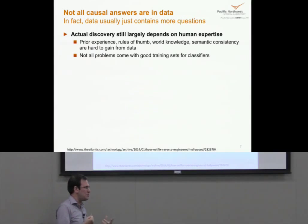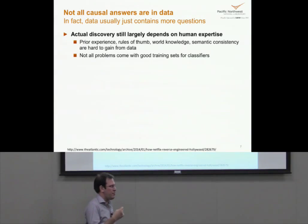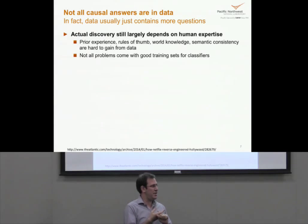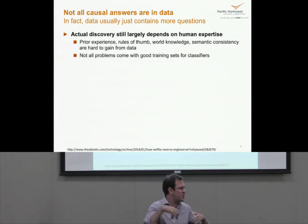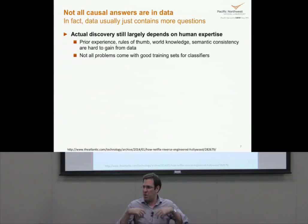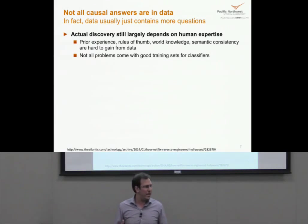Actual discovery still depends largely on human expertise — prior experience, rules of thumb, knowledge about the world, the kind of semantic consistency that humans can apply. The challenge is that in a lot of really hard problems, there's simply not good training data. E-commerce is a great example of a problem that has tons of training data. But for scientific discovery — say, engineering a fundamentally new energy storage material — if I want to build out wind energy, I've got to store it. To discover a new battery material, I can't build a classifier to find that material in data because I don't even know what I'm looking for.